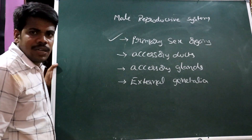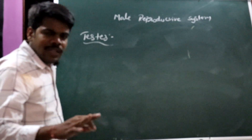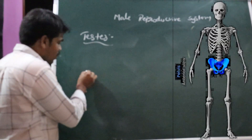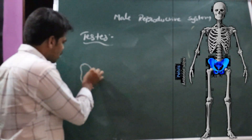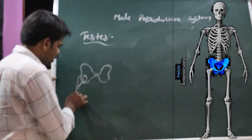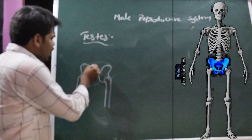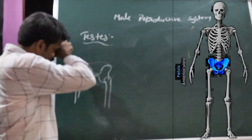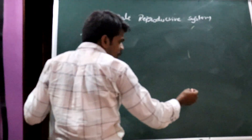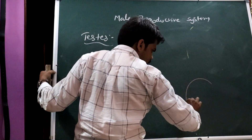First we will discuss the primary sex organs, that is the testes. All reproductive organs are present at the pelvic region — the region where the legs originate and the pelvic girdle is present. In this pelvic region the reproductive organs are present in both male and female. Testes are paired structures present in the pelvic region within a pouch called the scrotum.